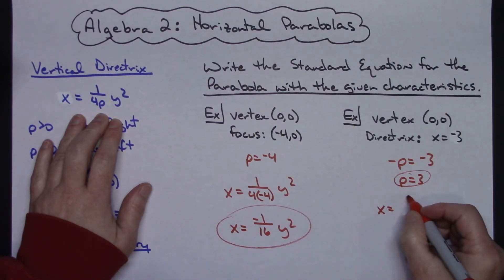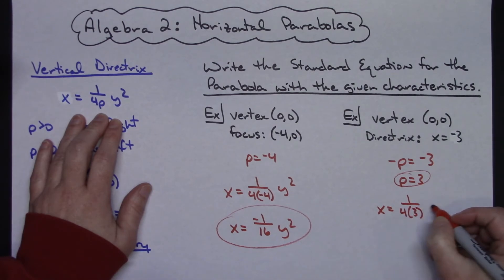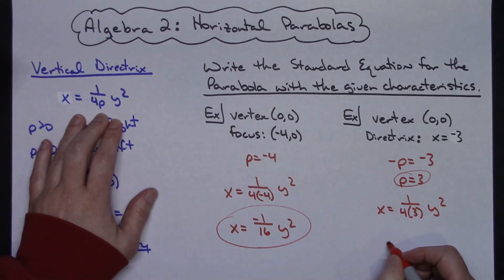So x equals 1 over 4 times my value of p, y squared. And then 3 times 4 there on the bottom is going to be 12. So x equals 1 twelfth y squared.